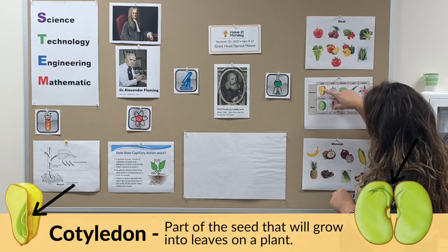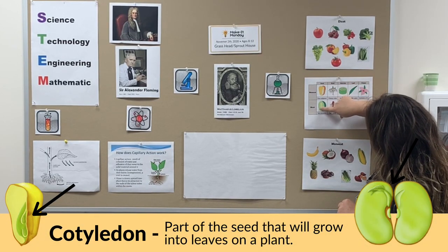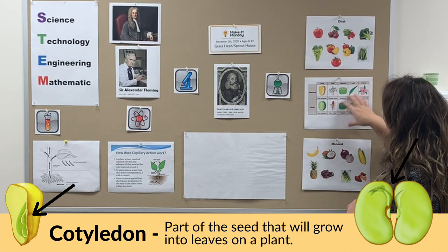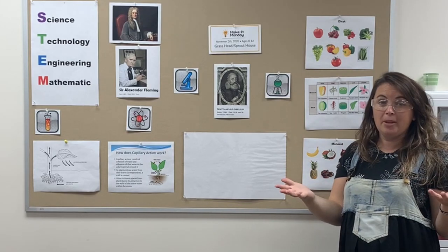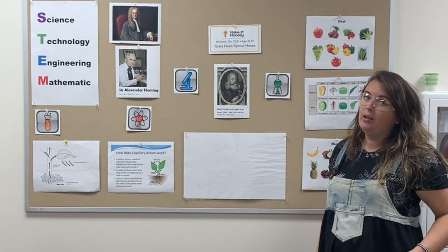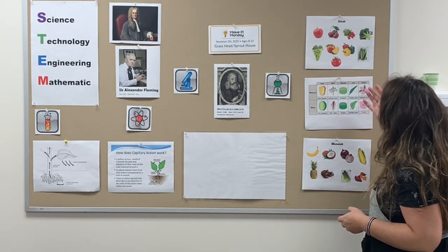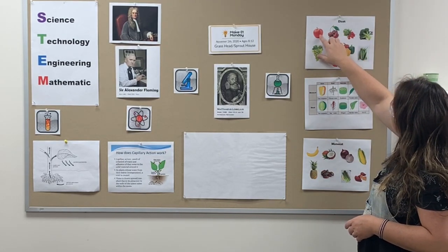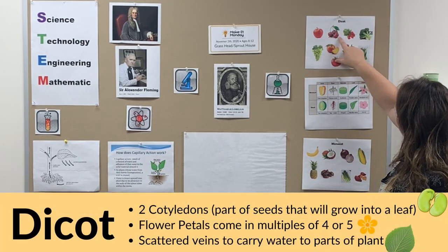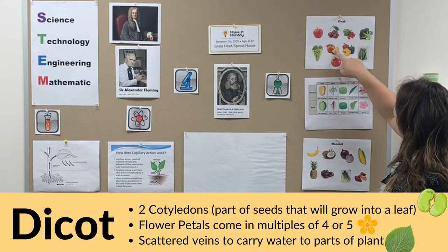So what are cotyledons? You can kind of see them right inside this picture — they're the first leaves that kind of pop out of a plant. Some of the plants or food that you eat come from different types of plants, and here are some examples of the dicots: here is an apple, cherry, grape, peach — those are your fruits.